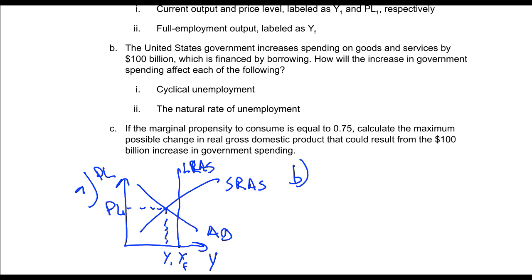The United States government increases spending on goods and services by $100 billion, which is financed by borrowing. How will the increase in government spending affect each of the following? The idea is that cyclical unemployment will decrease. The idea behind the spending is that we'll get the economy going, the business cycle will improve, we'll go into an expansionary time, and so cyclical unemployment will decrease.